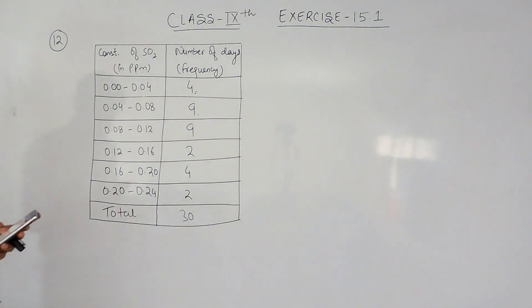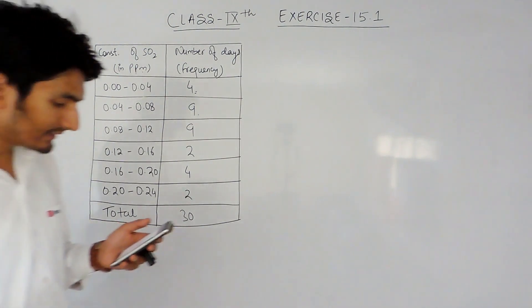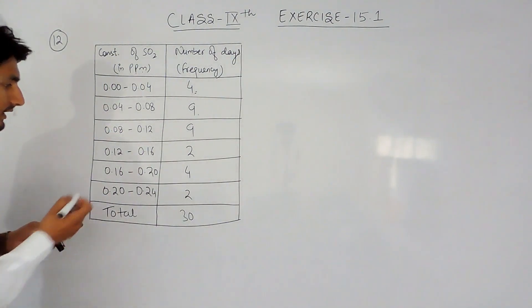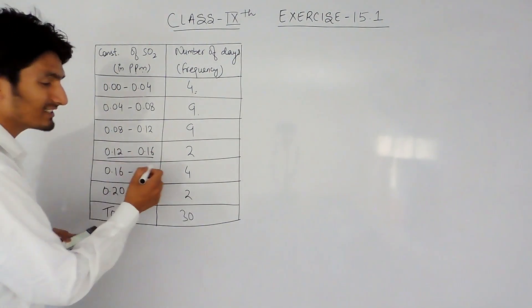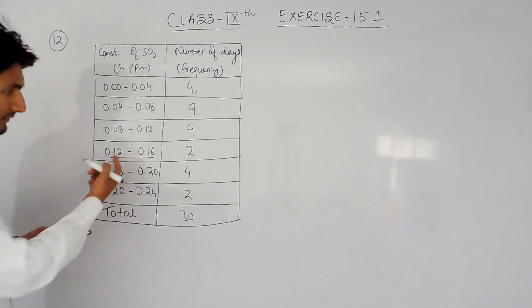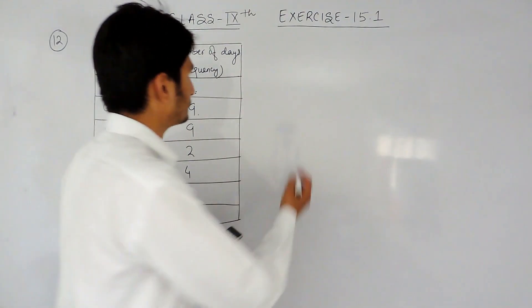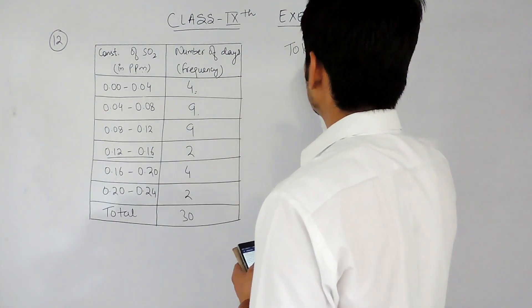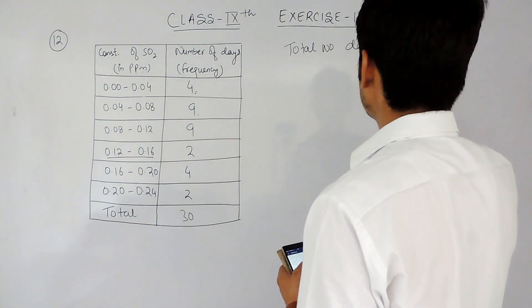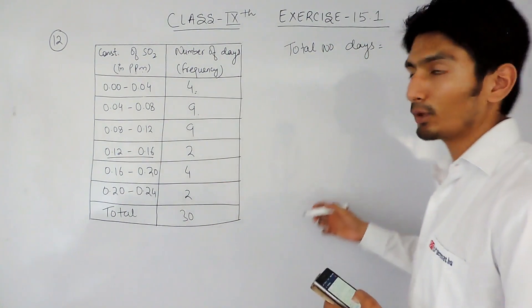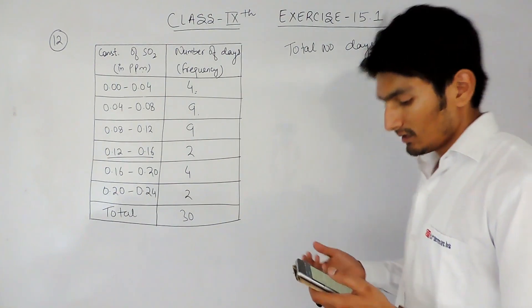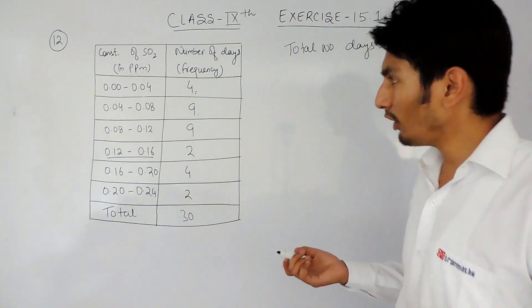Now I have to find the concentration of SO₂ in the interval 0.12 to 0.16, so I have to find the probability for this case. The total number of trials, that is the total number of days, is 30.